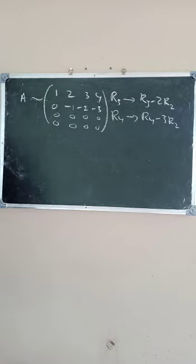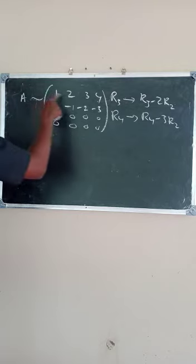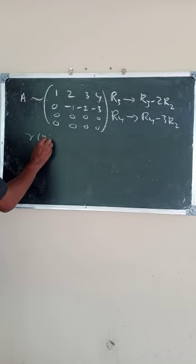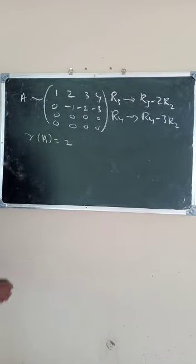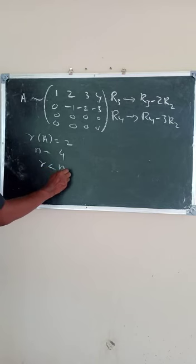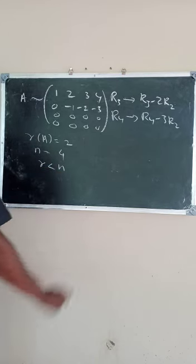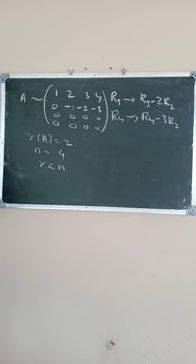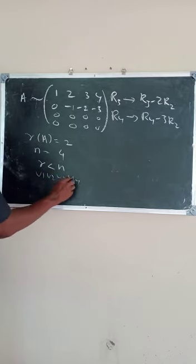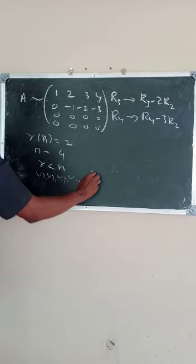Now we identify the number of non-zero rows. In this case the number of non-zero rows is 2, that is, rank of A equals 2. Number of vectors n equals 4. Since rank r is less than n, the vectors V1, V2, V3, V4 are linearly dependent.